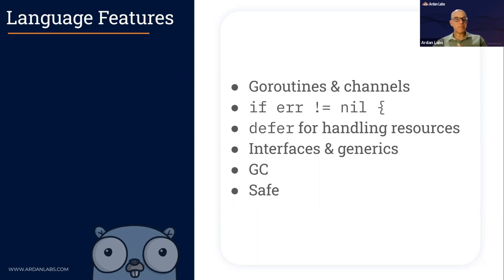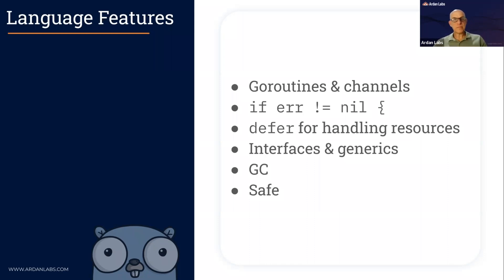Go is a statically typed language — its type system guards you from errors. For example, you cannot divide an integer with a float; the compiler won't allow it. Even though the type system is strict, Go has interfaces and generics so you can write functions that accept many types. For example, the io.Reader interface — anything you can read from — is implemented by an open file, a socket, an HTTP request, and many other things.